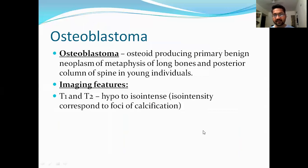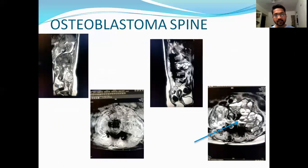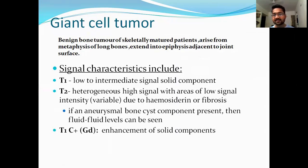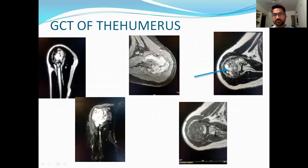Next is osteoblastoma. Location is the metaphysis of long bones or the posterior column of the spine, especially in immature patients. Here is a case of osteoblastoma of the spine where classically we can see blood-fluid or fluid-fluid levels. In giant cell tumor, it arises from the metaphysis of the long bone and can extend into the epiphysis. Signal characteristics are low to intermediate on T1 and T2, with hyperintense enhancement of the fluid component. Here is a case of giant cell tumor within the humerus showing mixed fluid loculation with fluid and cystic components.